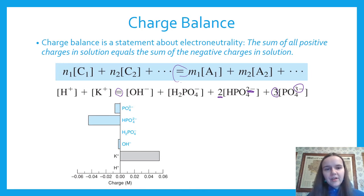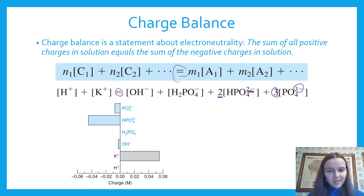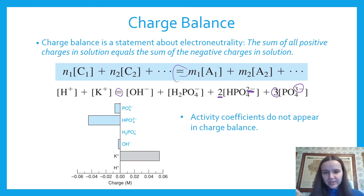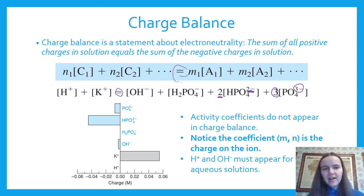Here's an example of what the actual numbers look like: all the blue things are the various negative ions and gray is positive ions. You have a lot of K⁺ (large gray bar) and a lot of HPO₄²⁻, while many other species have almost nothing at equilibrium. The net bars on one side equal the net bars on the other side. Note that activity coefficients do not appear in charge balance — it's just concentration times charge. If you're in water, include H⁺ and OH⁻ because they are always present.